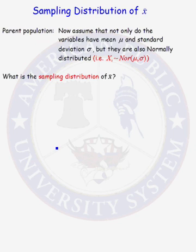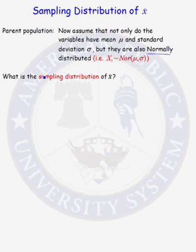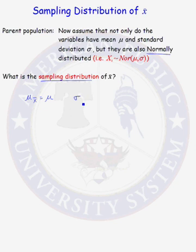Let's take this problem a step further. In addition to knowing the mean and standard deviation of every random variable from our parent population, let's now also assume that the distribution of each of those random variables is normally distributed — each random variable from our parent population is normally distributed with mean mu and standard deviation sigma. We want to know what the sampling distribution of x-bar is. From what we did previously, the mean of x-bar equals the mean of our parent population, and the standard deviation of our sample mean equals the parent population's standard deviation divided by the square root of n.